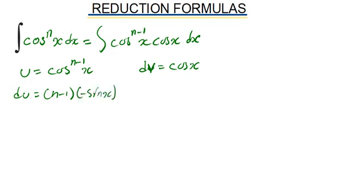So our du will be equals to n minus 1 times the derivative, which is minus sine of x times cosine to the n minus 2 of x. The power reduces by 1. Our v will be equals to sine of x, because when you differentiate sine you get cosine.